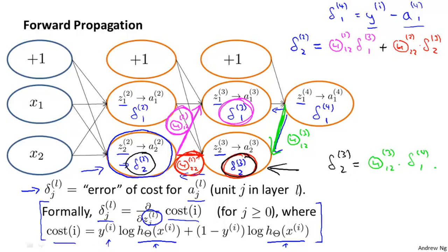And by the way, so far I've been writing the delta values only for the hidden units, and not, but excluding the bias units. Depending on how you define the backpropagation algorithm, or depending on how you implement it, you may end up implementing something to compute delta values for these bias units as well. The bias units always output the value of plus one, and they are just what they are, and there's no way for us to change the value. And so depending on your implementation of backprop, the way I usually implement it, I do end up computing these delta values, but we just discard them, and we don't use them, because they don't end up being part of the calculation needed to compute the derivatives.